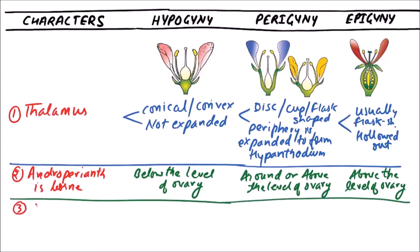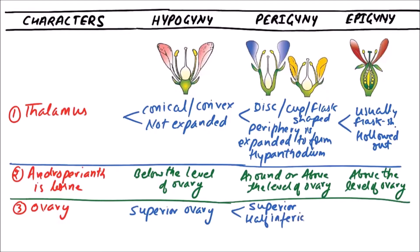Next is the terminology for the ovary based on position. In hypogyny, the ovary is said to be a superior ovary. In perigyny, the ovary is said to be either superior or half inferior. In epigyny, the ovary is said to be an inferior ovary.